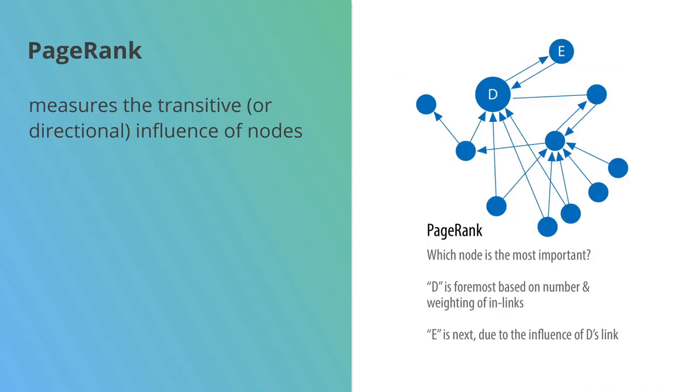The last one that we're going to look at is called PageRank, and this one is slightly different to the others. This time we're trying to find the transitive influence—we don't just want to know our influence on our own, we want to know if we're connected to other important nodes.